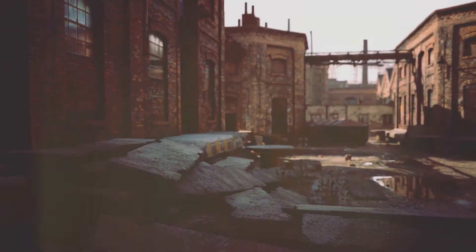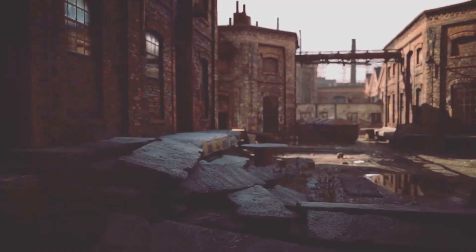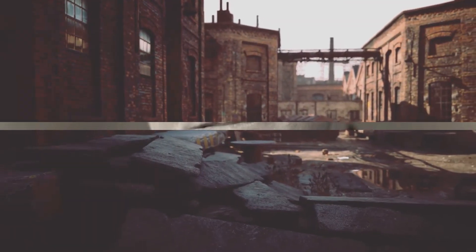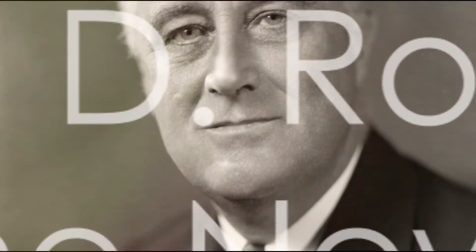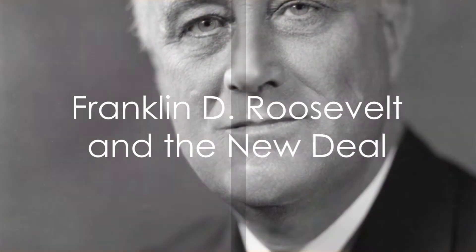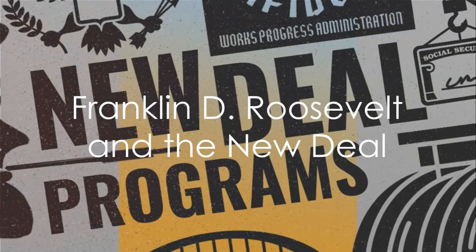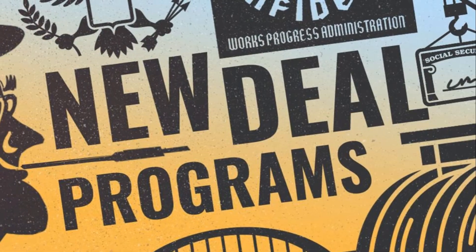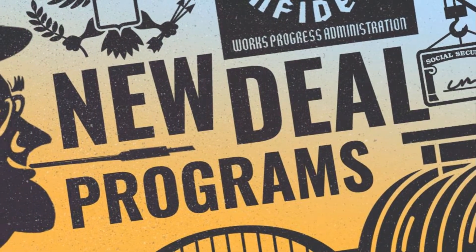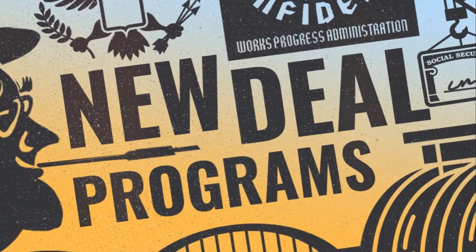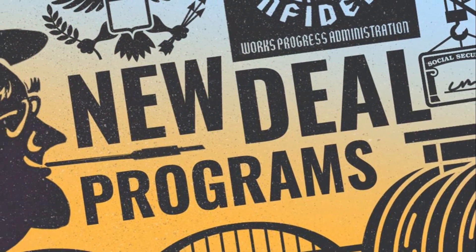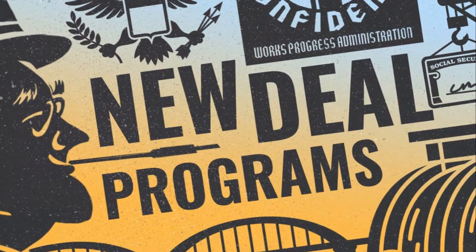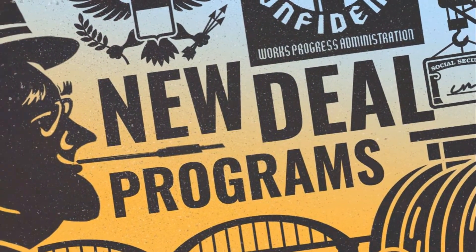Hoover's reliance on rugged individualism and laissez-faire policies proved insufficient. Franklin D. Roosevelt's election in 1932 brought a new approach. FDR believed in active government intervention to combat the Depression. Relief, recovery, and reform were the pillars of the New Deal.